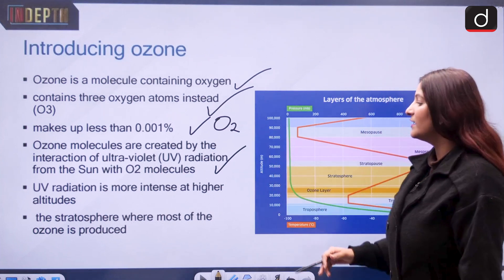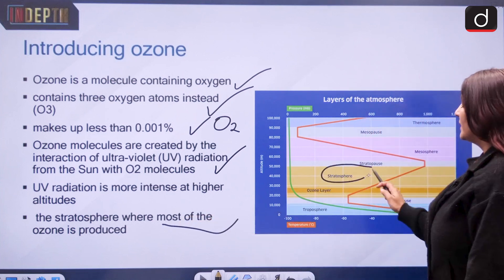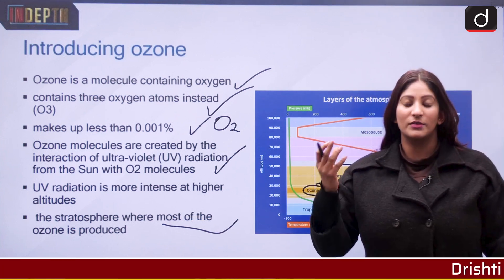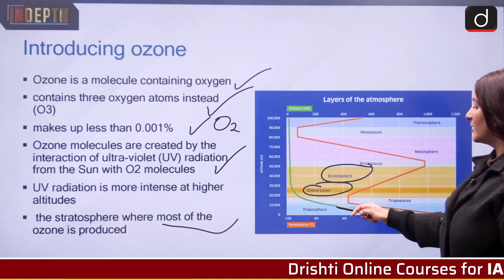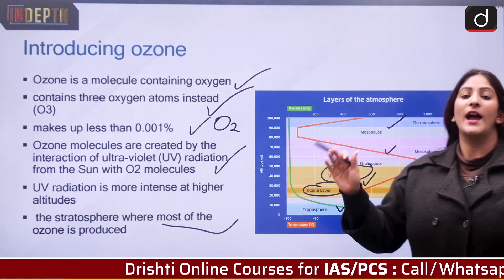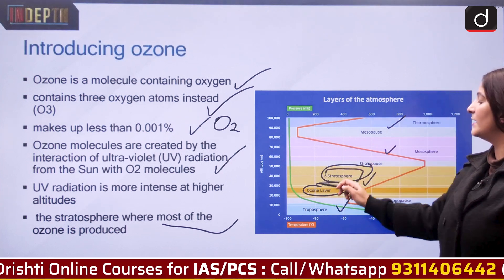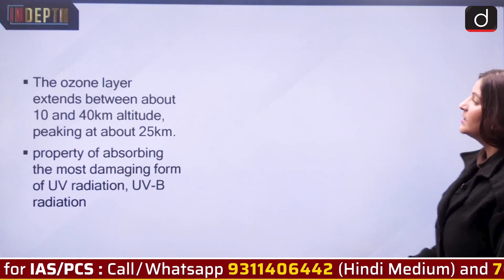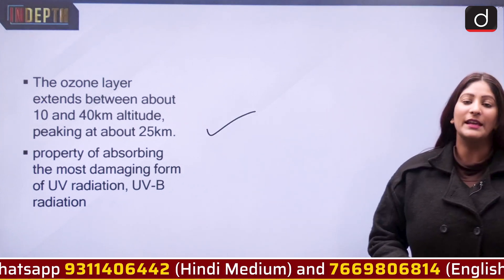UV radiation is more intense at higher altitudes, and the stratosphere is where we have our ozone layer. Remember the layers of the atmosphere: troposphere, stratosphere, mesosphere, and thermosphere. It is in the stratosphere that our ozone layer resides. The ozone layer extends between 10 to 40 km altitude, peaking at about 25 km.